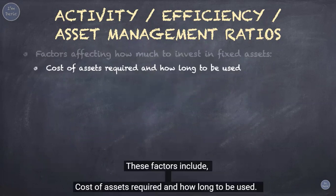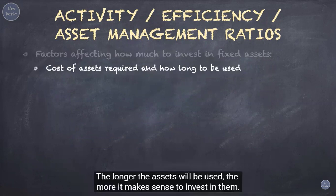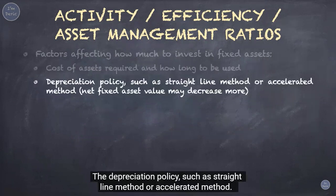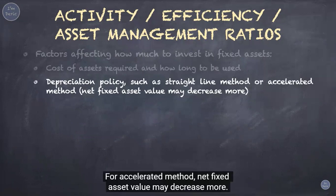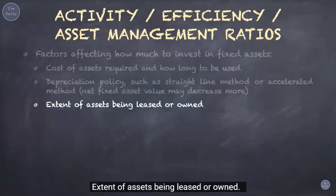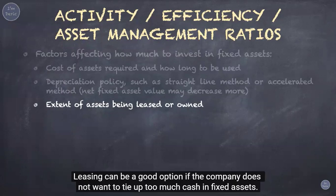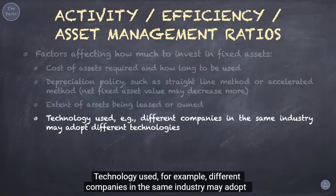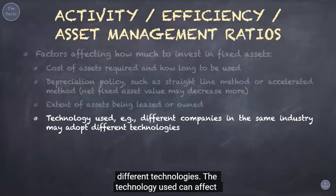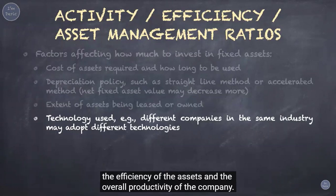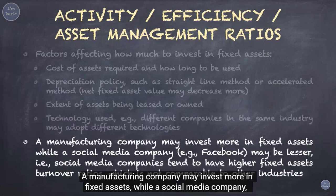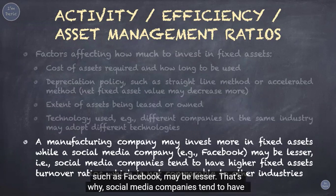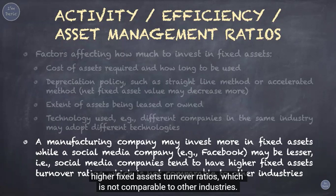There are factors affecting how much to invest in fixed assets, including: the cost of assets and how long they will be used — the longer, the more it makes sense to invest; the depreciation policy, such as straight-line or accelerated methods, where accelerated methods reduce net fixed asset value more; the extent of assets being leased versus owned — leasing avoids tying up too much cash; and the technology used, which can affect asset efficiency and productivity. For example, a manufacturing company may invest more in fixed assets, while a social media company like Facebook may invest less, leading to higher fixed assets turnover ratios that are not comparable across industries.